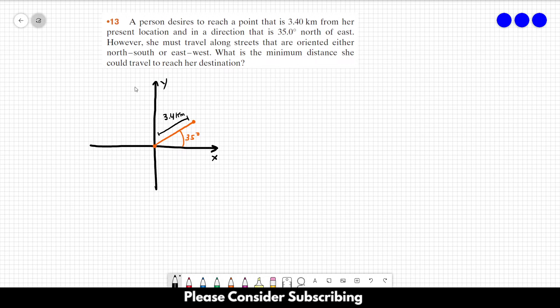So, the streets are oriented north-south or east-west. So, the person should go like this and then like this. Or, like this and then like this.